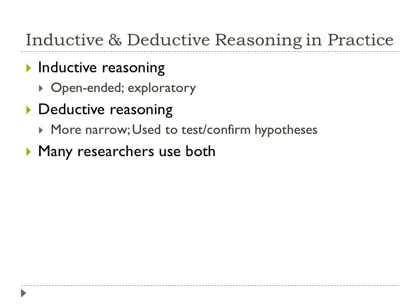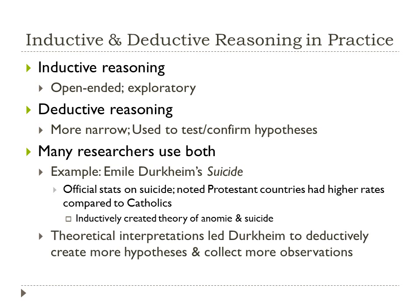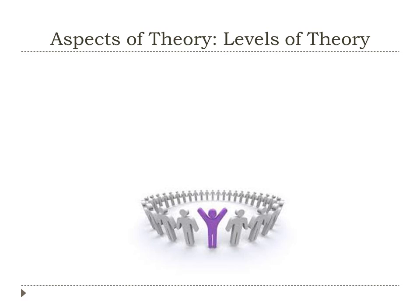Many researchers use both inductive and deductive reasoning in the course of studying one subject. For example, Emile Durkheim's study of suicide: looking at official statistics, he noted that Protestant countries had higher rates of suicide compared to Catholics, and inductively created his theory of anomie and suicide based on those observations. His theoretical interpretations then led Durkheim to use deductive reasoning to create more hypotheses and collect more observations — using inductive reasoning to create his theory, then deductive reasoning to test it.